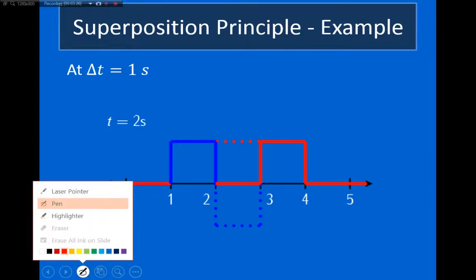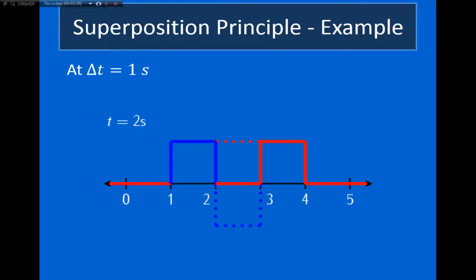Now, finally, I want to look at what happens at time t = 3 s. At that point, this red wave is going to wind up over here, and this blue wave is going to wind up over here. What we can see is at this point, the two waves have just completely passed through each other. The blue wave has its initial shape and is moving to the left. The red wave has its initial shape and is continuing to move to the right.